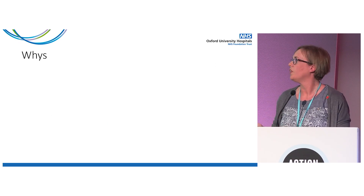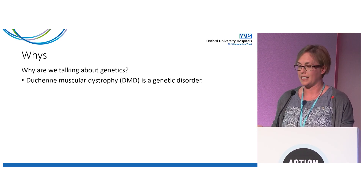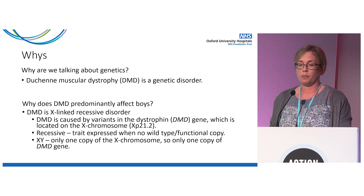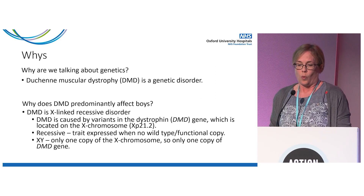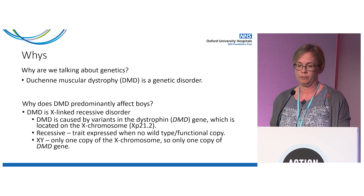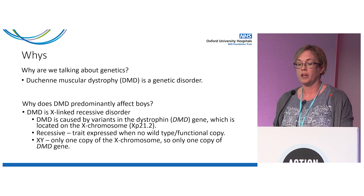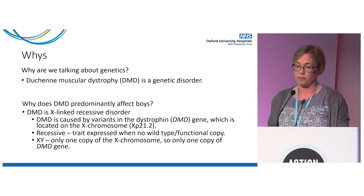Moving on to the whys: Duchenne Muscular Dystrophy is a genetic disorder. Why does Duchenne predominantly affect boys? It's an X-linked recessive disorder. X-linked means it's caused by a gene called dystrophin, which is located on the X chromosome. Recessive means a trait that is only expressed if there is no wild-type or functional copy of the gene. Boys have one X and one Y chromosome, so they only have one copy of the DMD gene, and if there's a variant on that copy making it non-functional, they are affected with Duchenne.